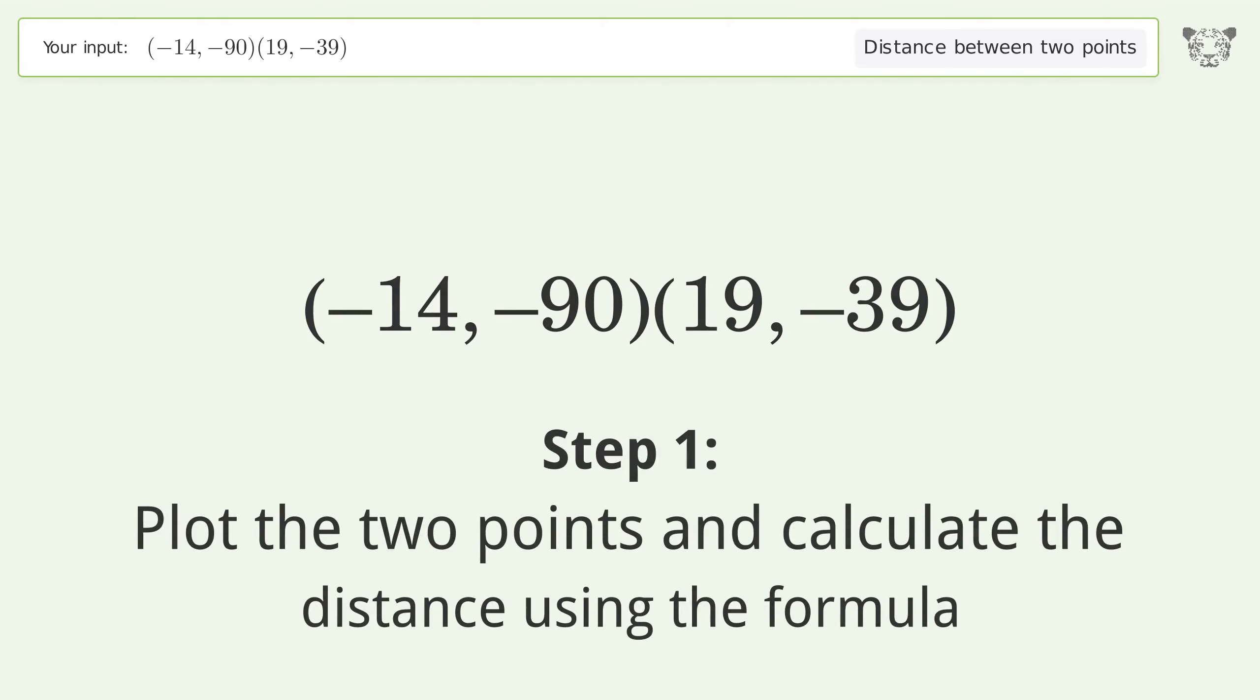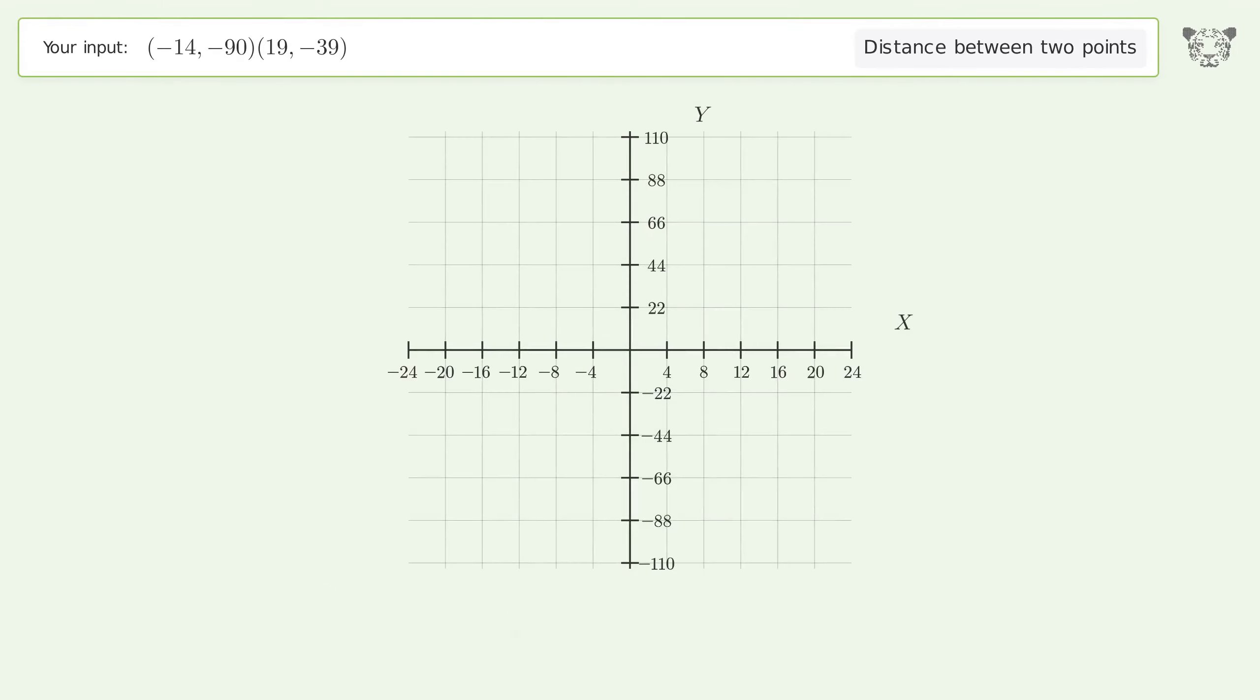Plot the two points and calculate the distance using the formula. The coordinates of Point 1 are x1 equals negative 14 and y1 equals negative 90. The coordinates of Point 2 are x2 equals 19 and y2 equals negative 39.